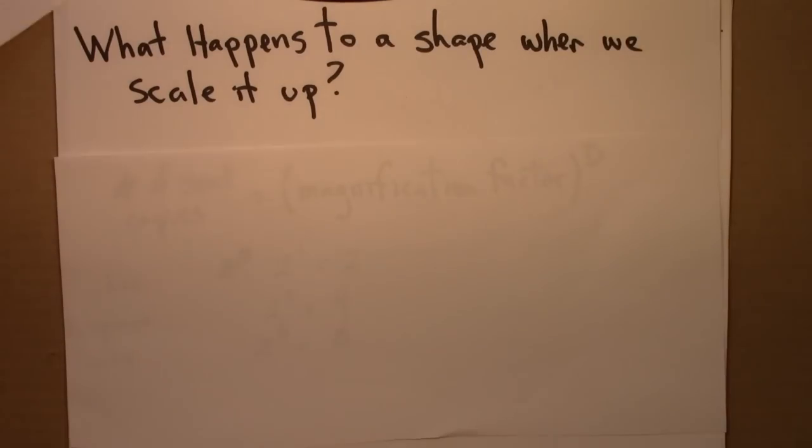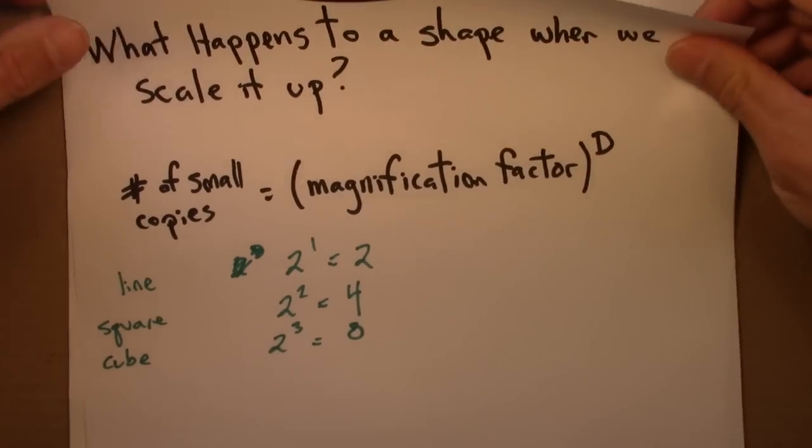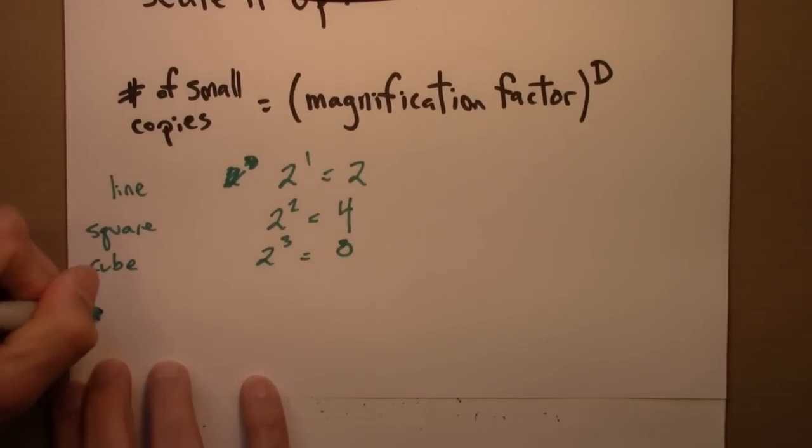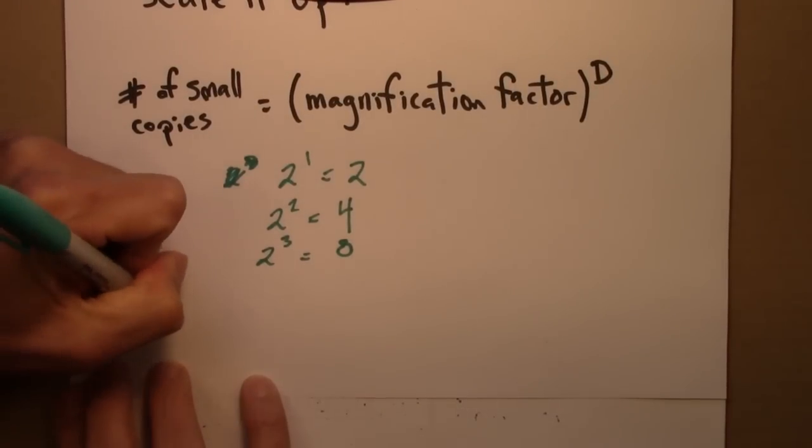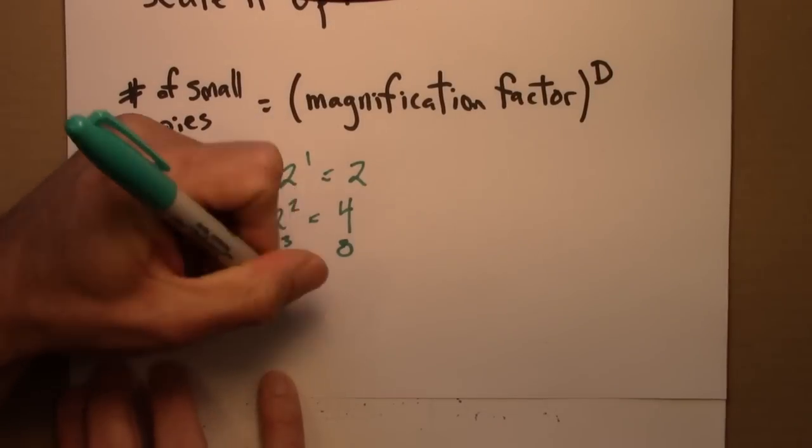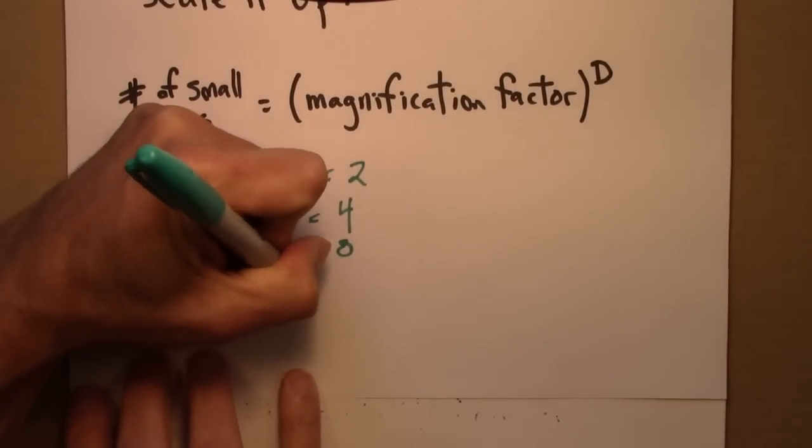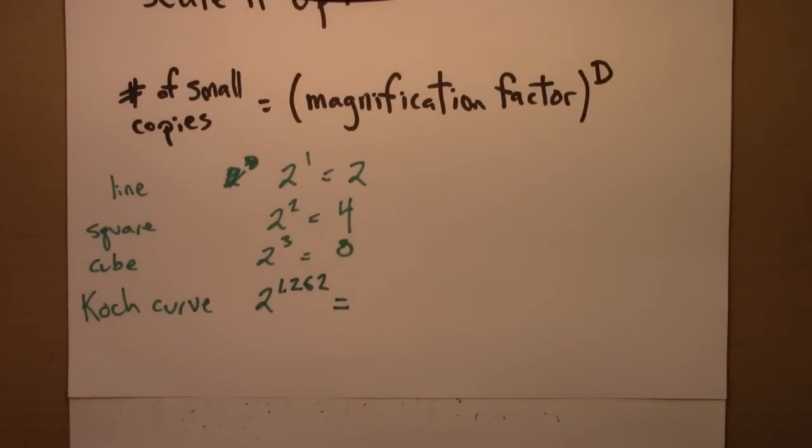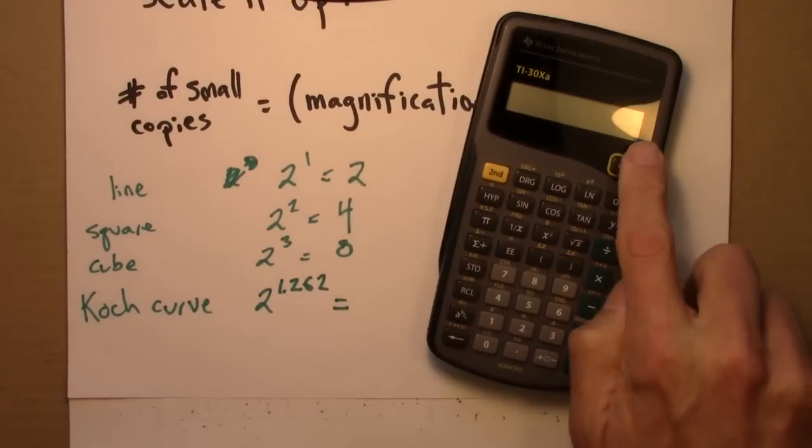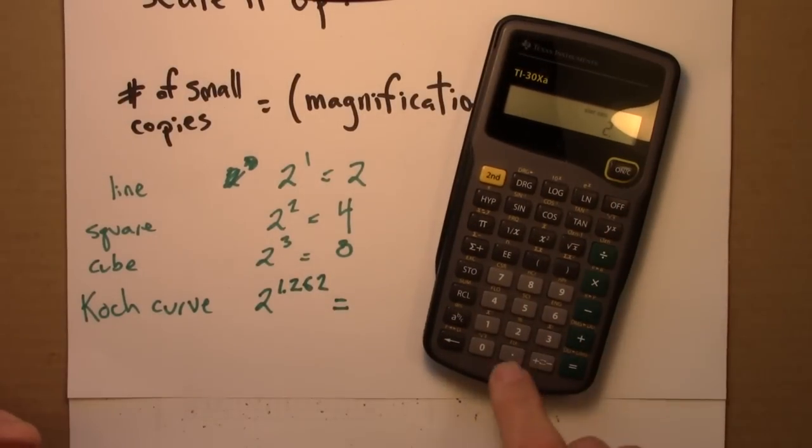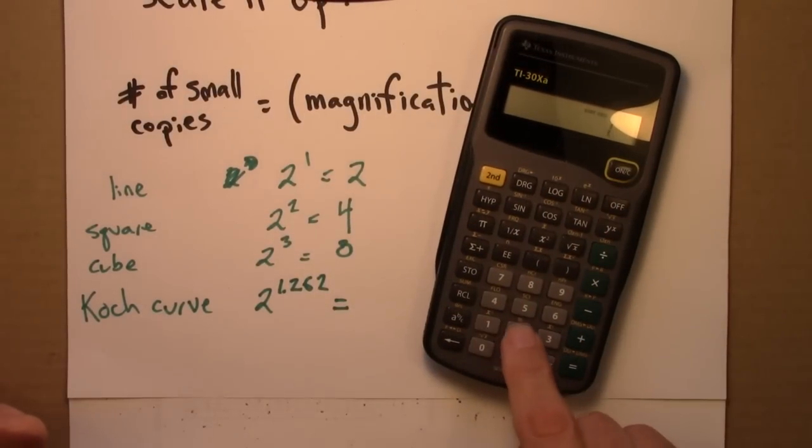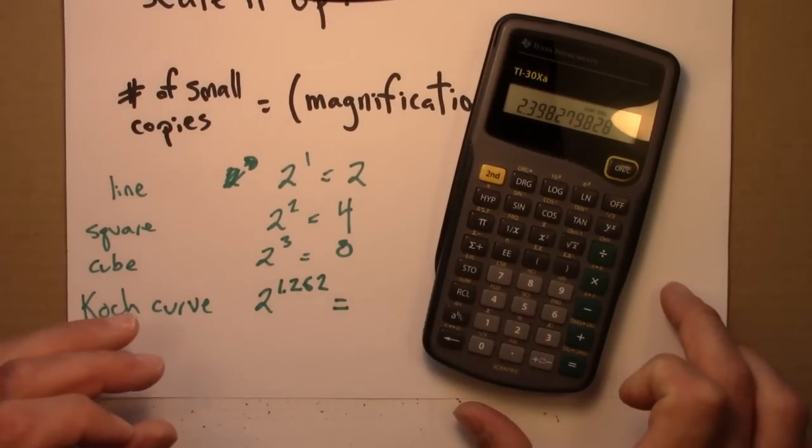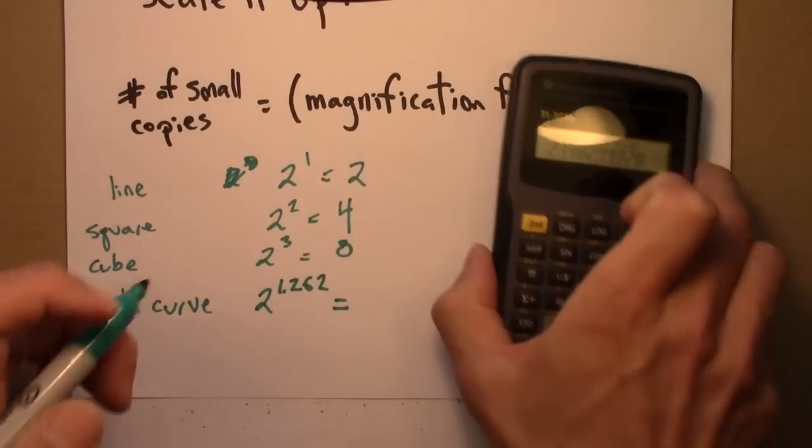So the dimension of the Koch curve, let's finish this out. Koch curve was about 1.262. So how much bigger is the twice as large Koch curve? Well, let's see. I'm going to need to take two and raise it to the 1.262, and I get 2.399, let's call it around 2.4.